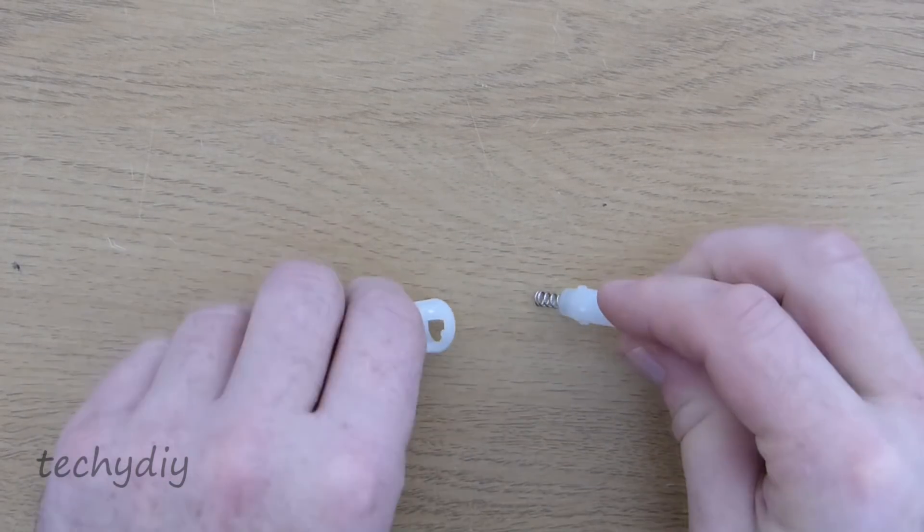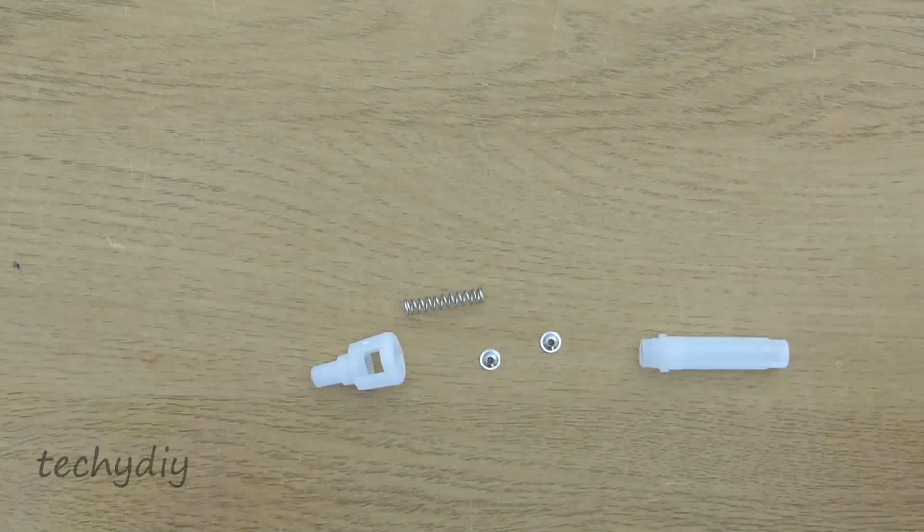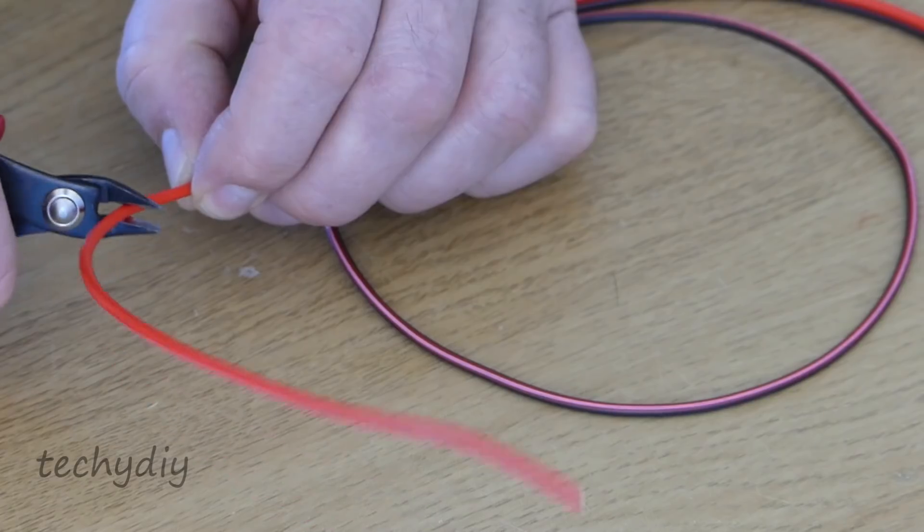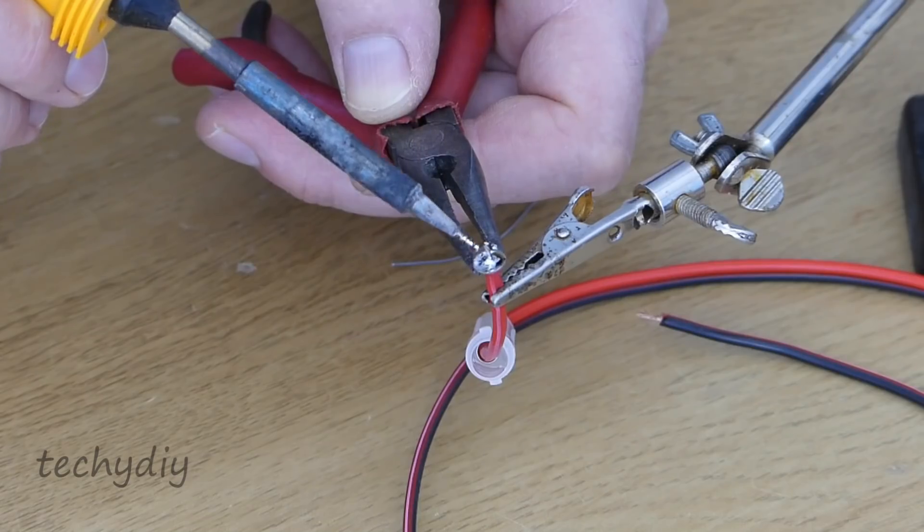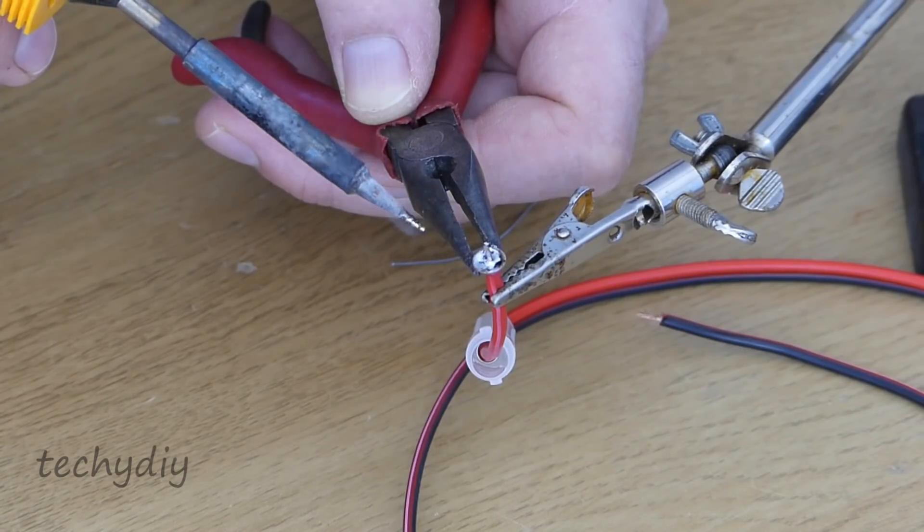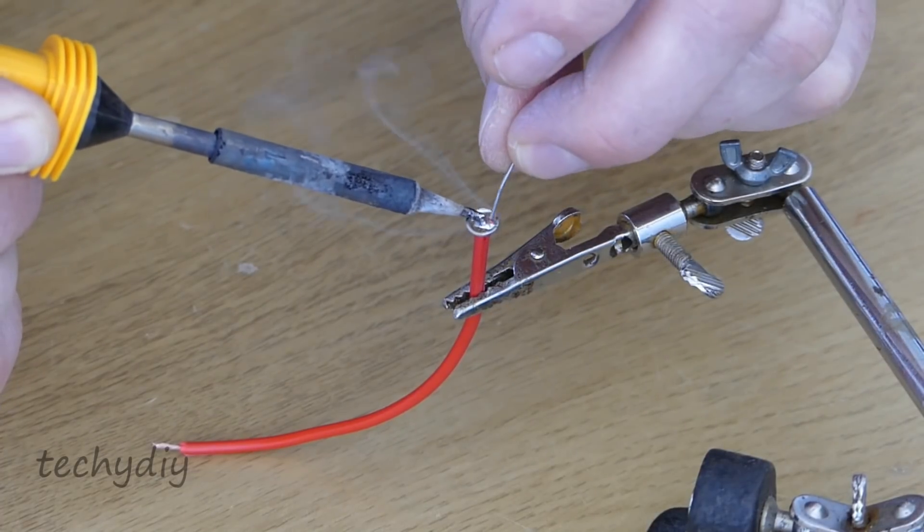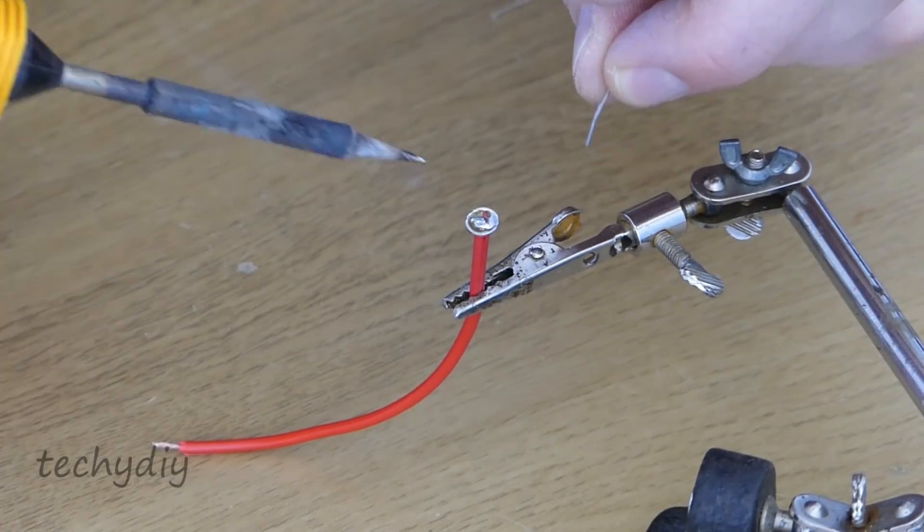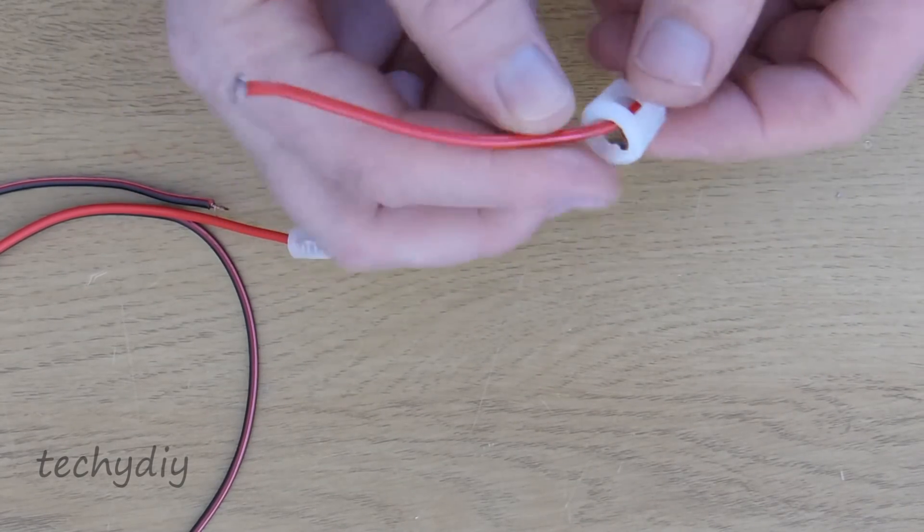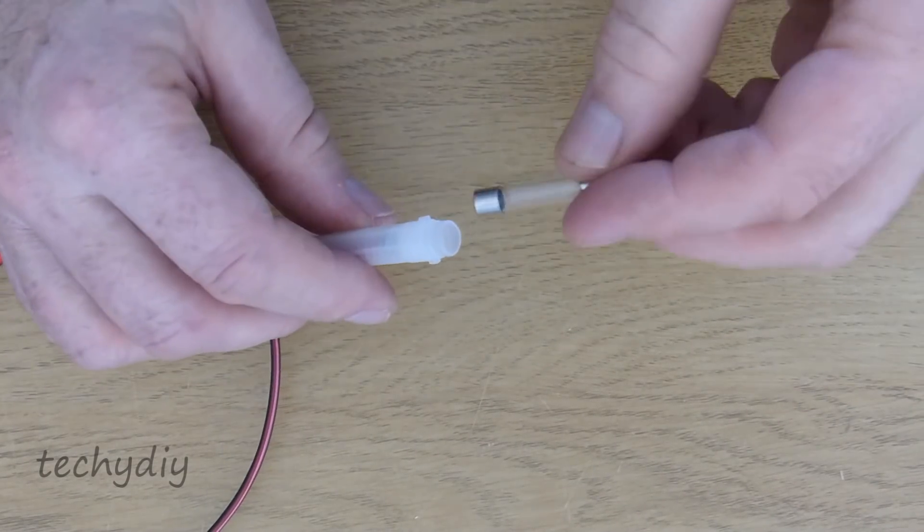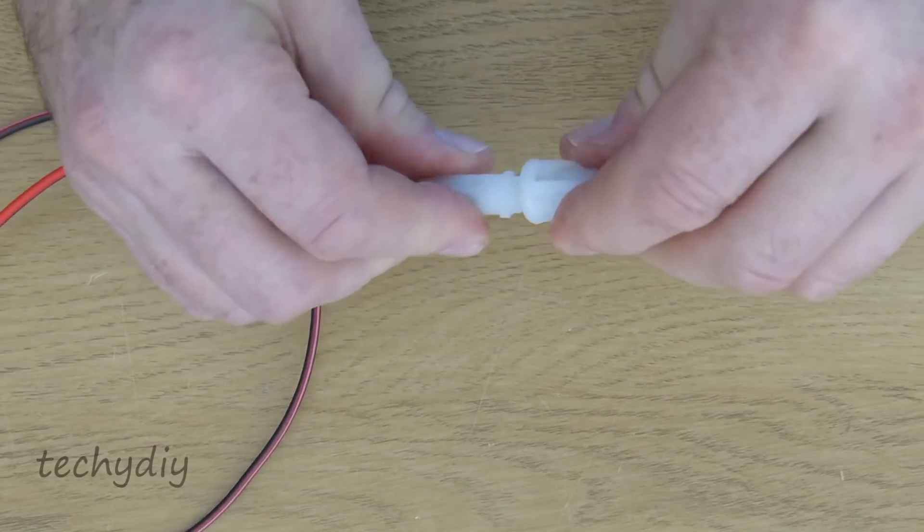The first task is to solder the inline fuse holder into the positive side of a length of DC cable. Making sure to install the body of the fuse and the spring before soldering on the contact. Then the off cut of wire can be soldered to the second contact. The fuse is then assembled. I've used a 3 amp fast blow fuse and its function is to protect the battery in the event of a short circuit.